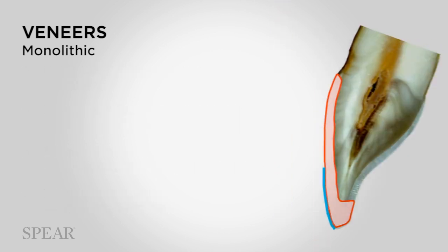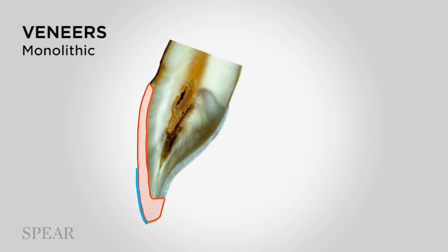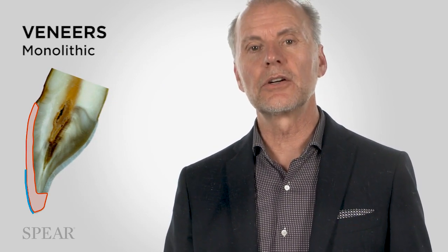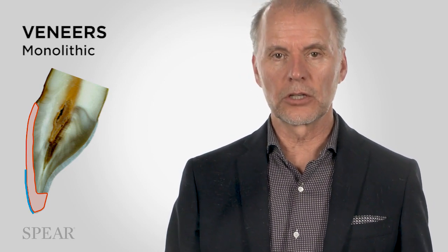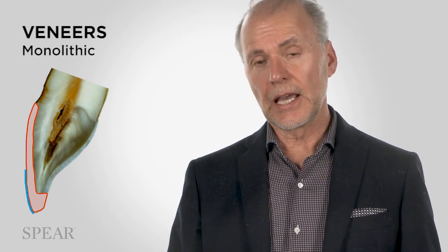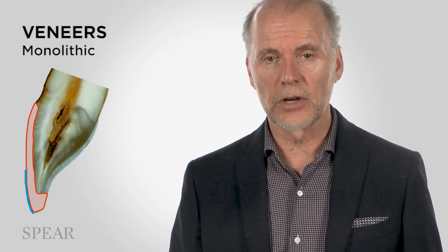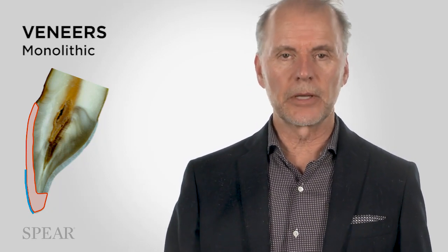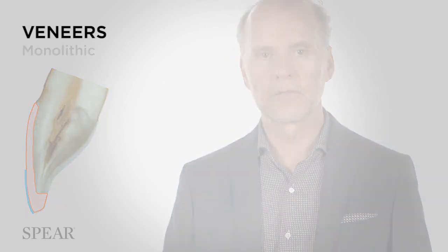Monolithic means applying surface stains and over the top of that, a surface glaze. Over a period of time, that can wear off. Some research shows that as early as 8 to 10 years, those surface stains can begin to be diminished. And yet we're discussing veneers at an 83% survival rate at 20 years. So a stain and glaze may be less expensive today, but perhaps not as long-lasting from an aesthetic perspective.